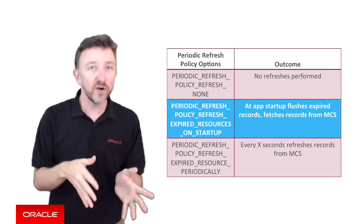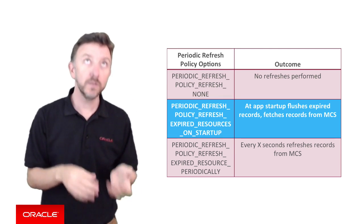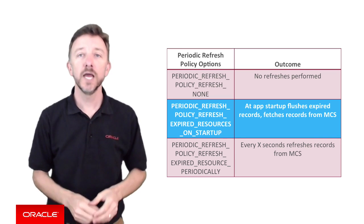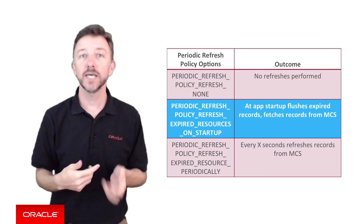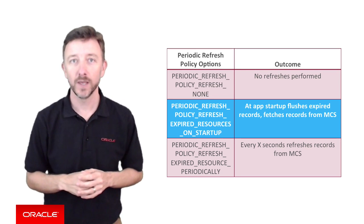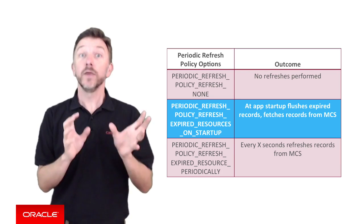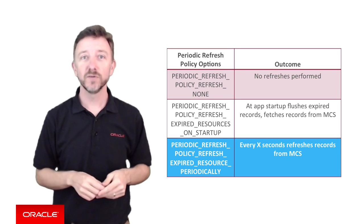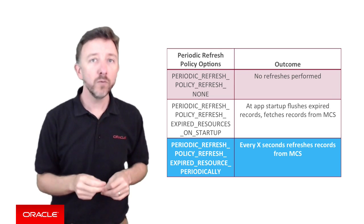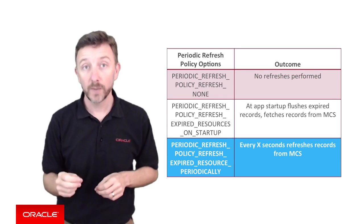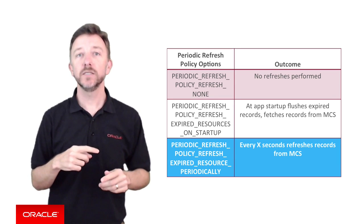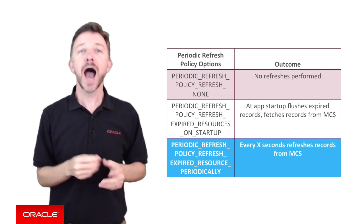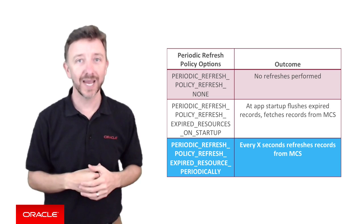The periodic refresh policy refresh expired resources on startup option means only when the app starts will expired objects be flushed from the local cache and a request to your remote API be made to fetch updated objects from MCS. The periodic refresh policy refresh expired resources periodically option, along with a value given to the periodic refresh interval parameter in seconds, causes the background thread to call MCS every interval — again and again — asking if there are any updated objects to refresh the local cache with.